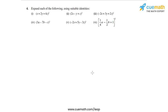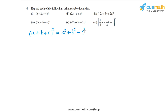In question 4, I have to expand each of the given expressions using suitable identities. If you observe each of the six questions, they are all squares of trinomial expressions. So the identity we can use is: (a + b + c)² = a² + b² + c² + 2ab + 2bc + 2ca. This is the identity I am going to use for each of the six questions.